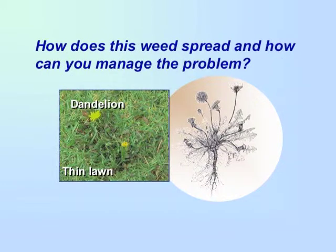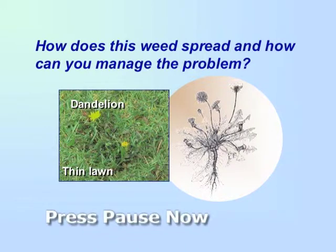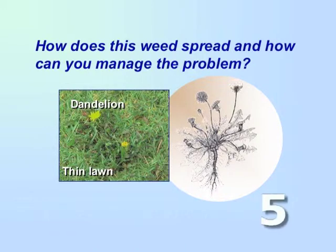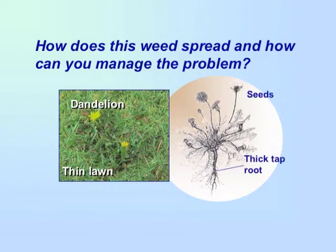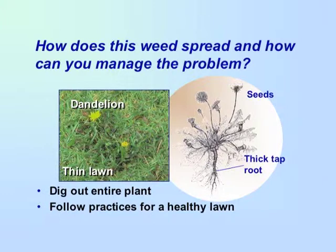How does this weed spread and how can you manage the problem? Dandelion spreads by its seeds and new plants can regrow from its thick taproot. Make sure you dig out the entire plant and follow practices for maintaining a vigorous lawn.